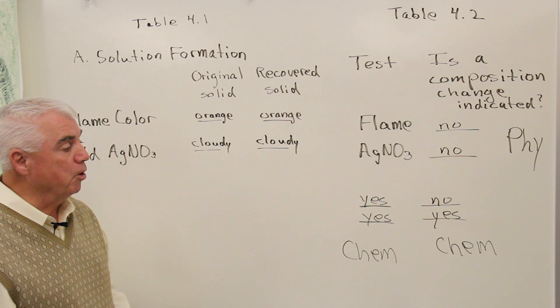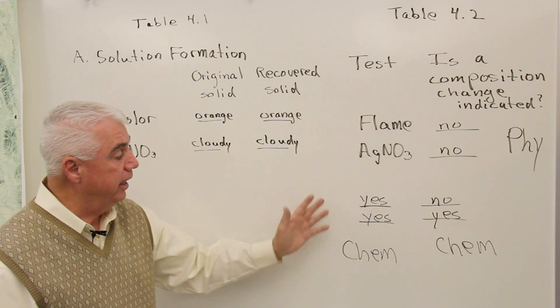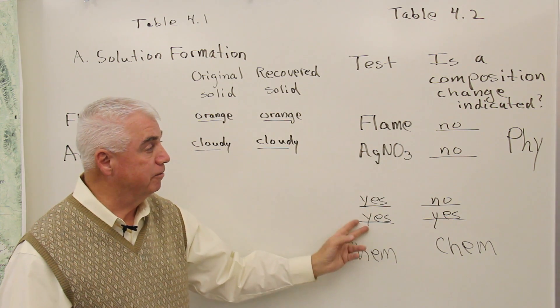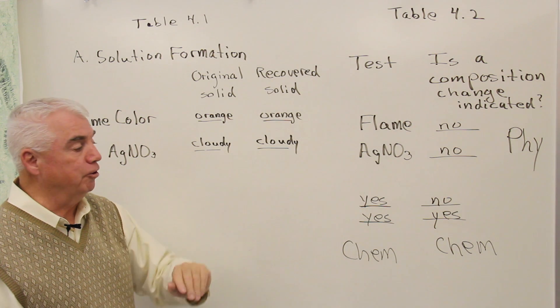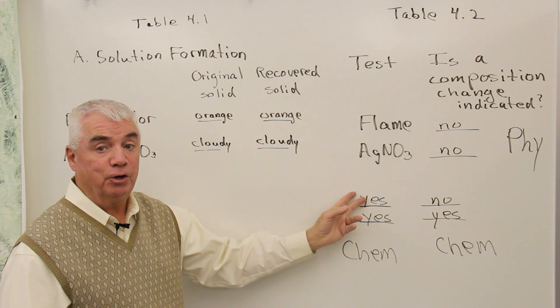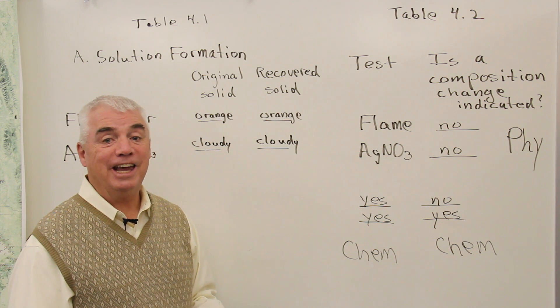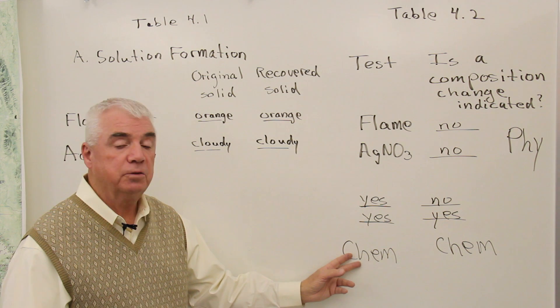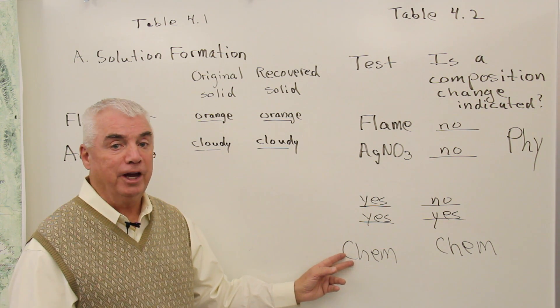Well, that's sort of the process that you'll use. Let's pretend now in another part of the experiment, say that you got yes and yes for these two blanks. In other words, you compare to before and after, and they look different to you. They gave a different test result. You'd say, well yes, it indicates a change in composition. If you had two yeses, you'd say, well hey, the process must have been a chemical change.